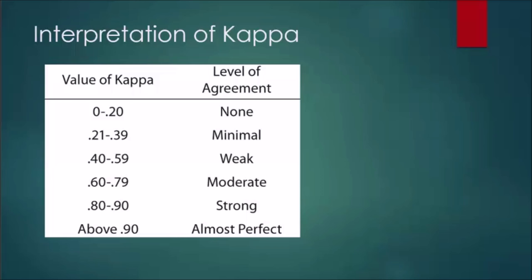It's also important to note that the ICC has different models and forms specific to different types of data. There are three types: Model 1 is where each subject is assessed by a different set of randomly selected raters — quite rare in reliability studies. Model 2 is when each subject is assessed by each rater and the raters have been randomly selected. Model 3 is when each subject is assessed by each rater, but the raters are the only raters of interest.